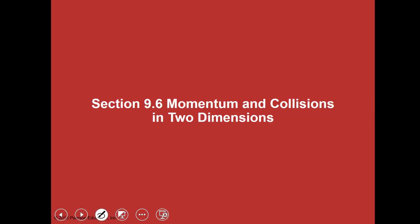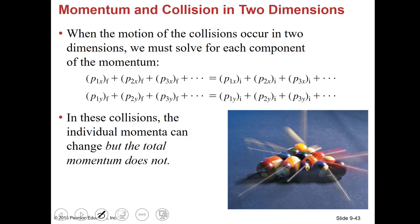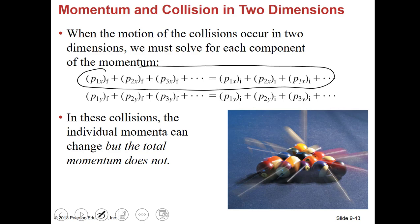We'll save two-dimensional collisions for class as well. It's the same concept, but we look at the x-direction independent from the y-direction. It looks complicated with a bunch of particles — like billiard balls — but it really just takes twice as long because you have two directions. On Wednesday we'll do some problems with momentum, finish up this chapter, and hopefully start Chapter 10, which is the energy chapter. Any questions, just email me. Bye-bye.